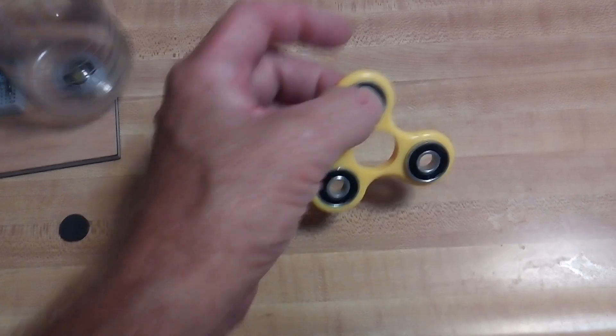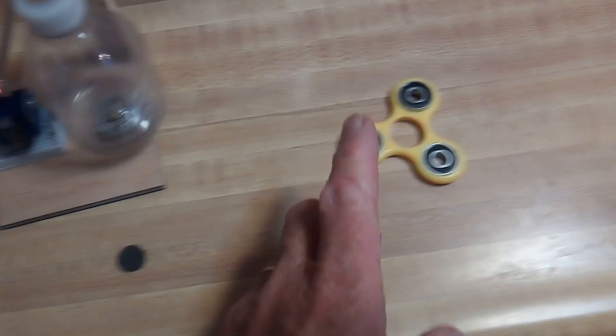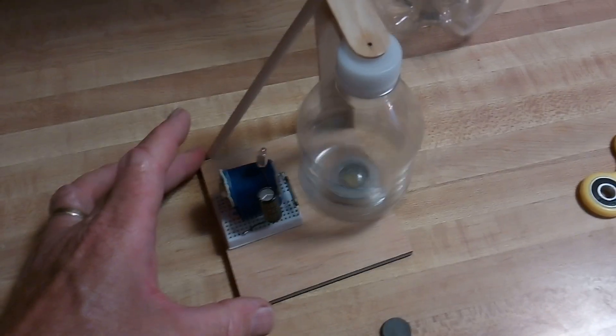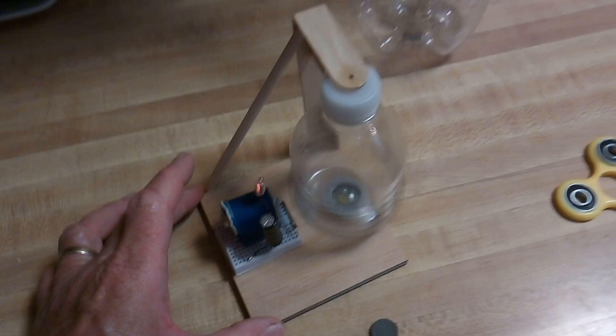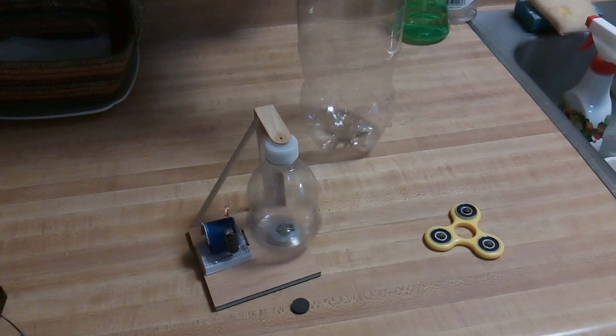Yeah, these fidget spinners, if you can find them around cheap, they're four bearings for a buck. Like I say, they make a really good pulse motor bearing. That's part two of the bottle motor. Thanks for watching.